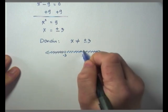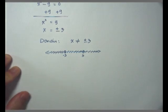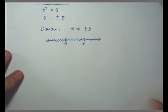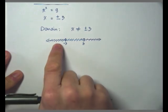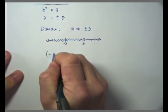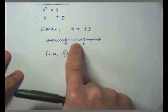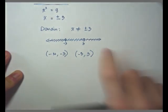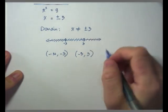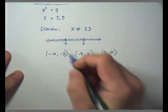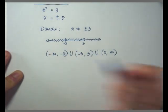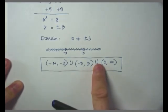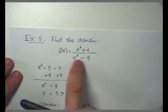On this number line, I'm shading anywhere except 3 and negative 3 — anywhere in between and outside those values — leaving open circles at negative 3 and 3, indicating those two values are excluded. The first shading gives me the interval negative infinity to negative 3. The middle shading gives me the interval negative 3 to 3. The last shading gives me the interval from 3 to positive infinity. Joining the three intervals together, that's how we finish writing our domain in interval notation for f of x equals x cubed plus 1 over x squared minus 9.